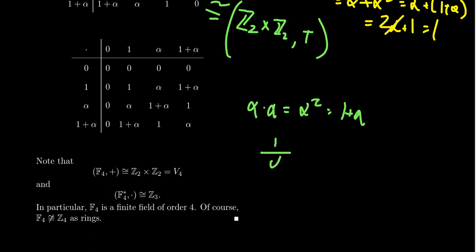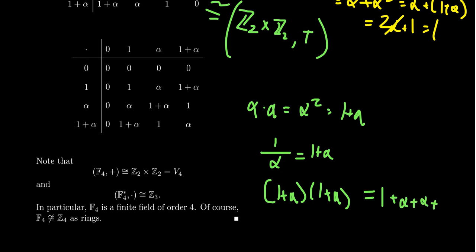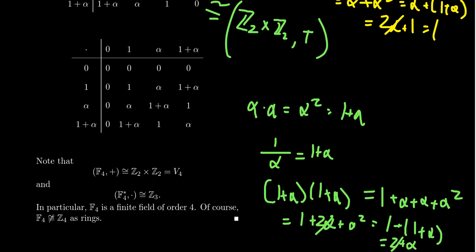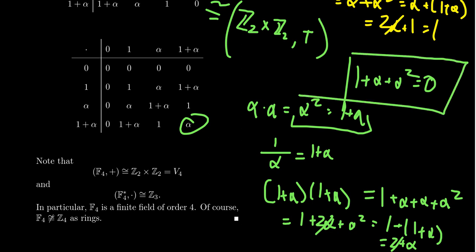We also get α·(1+α) = 1, which means α and 1+α are multiplicative inverses: 1/α = 1+α. That confirms every non-zero element has a multiplicative inverse — which is why this is a field. Finally, (1+α)·(1+α) using FOIL: 1+α+α+α² = 1+2α+α² = 1+0+(1+α) = 2+α = α. Every product is computed using the relation α²=1+α, which itself came from α being a root of the irreducible polynomial x²+x+1. The entire Cayley table is derived from the irreducible polynomial.